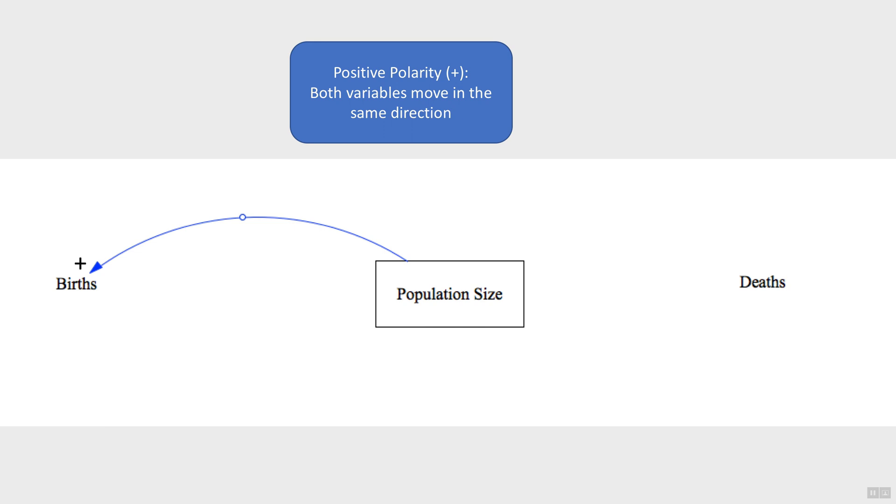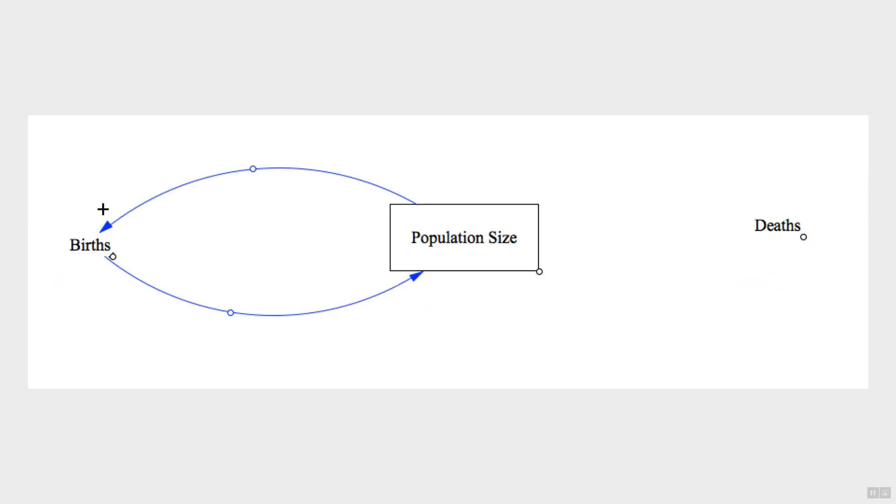In this first causal relationship, if the population size increases, then the number of births will also increase. And if the population size were to decrease, then the births will also decrease. This is a positive relationship, because both variables are moving in the same direction. We put a plus sign by the arrowhead to denote it's a positive link.